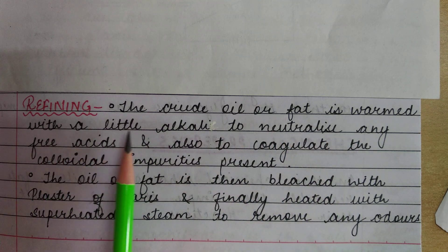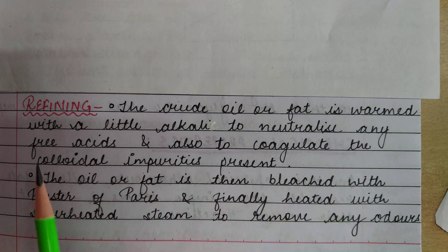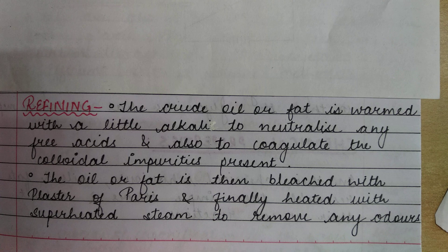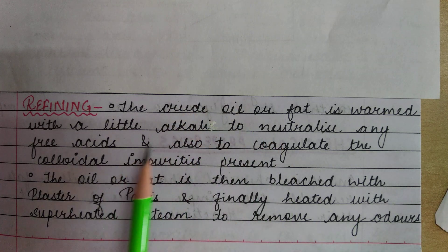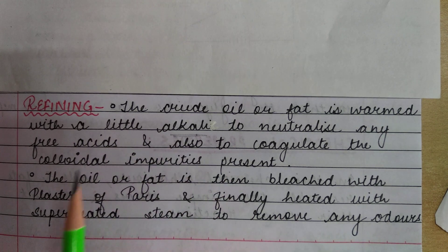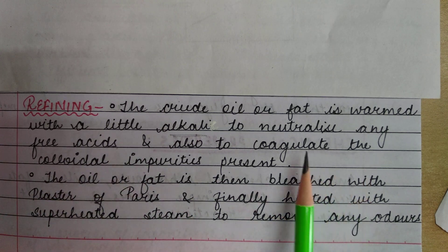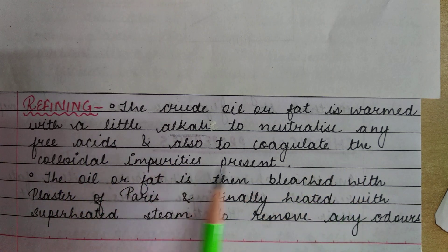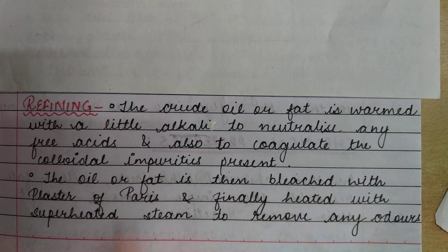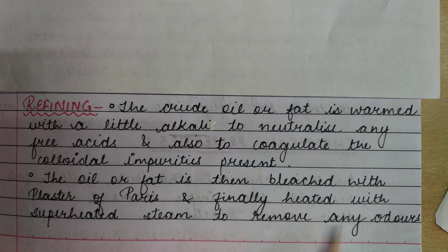For refining, the crude oil or fat is warmed with a little alkali to neutralize any free acids and to coagulate the colloidal impurities present in it. The oil or fat is then bleached with plaster of paris and finally heated with superheated steam to remove any odors.